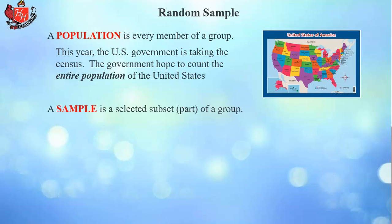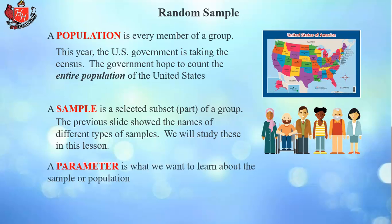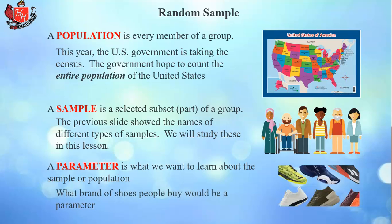A sample is a selected subset or part of that group. At Hoover High School, a sample might be one class or just some selected group. A parameter is what we want to learn about the sample population. For example, what brand of shoes people buy would be a parameter, or their age could be a parameter — just anything that relates to the sample that you want to study in particular.